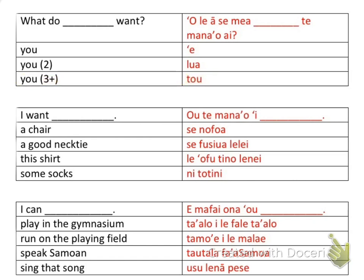As a singular person responding: 'I want a chair' is 'o te mana'o ai se nofoa'; 'I want a good necktie' is 'o te mana'o ai se fusi ua lelei'; 'I want this shirt' is 'o te mana'o ai le ofu tino lenei'; and 'I want some socks' is 'o te mana'o ai ni totini.'